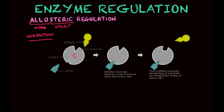I have an enzyme shown in three steps here. There will be an inhibitor — a molecule that will bind to the allosteric site, which is a site other than the active site where the substrate is supposed to bind. This inhibitor binds to the allosteric site and influences the enzyme to change the shape of the active site. When it does, the substrate is no longer able to bind to the active site. This is a form of allosteric regulation.